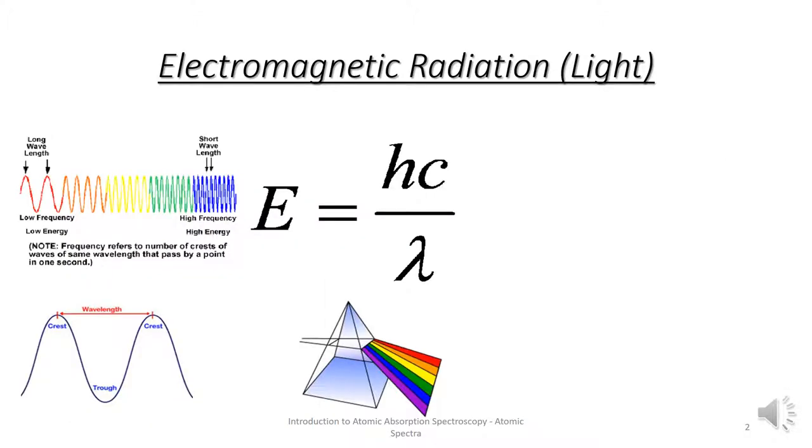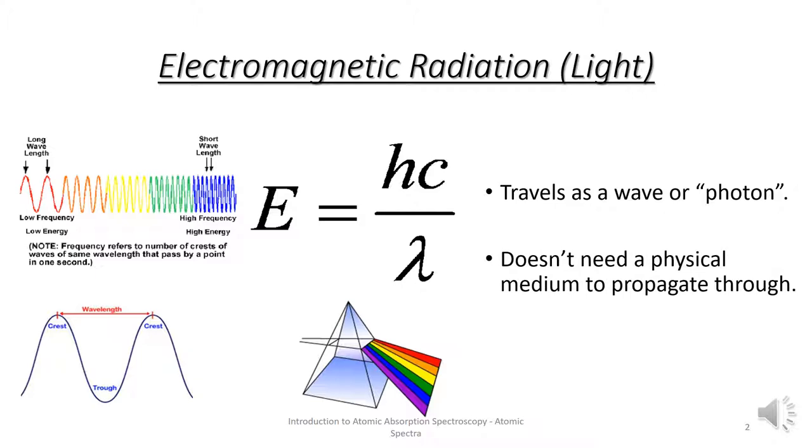Electromagnetic radiation or light is a form of energy that travels through the electromagnetic field. It travels as a wave or a photon. It doesn't need a physical medium to propagate through, so it can travel through the vacuum of space. Shorter wavelengths have higher energy.